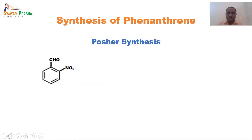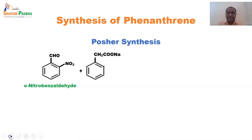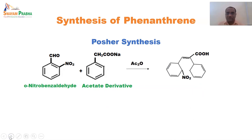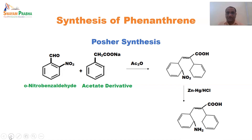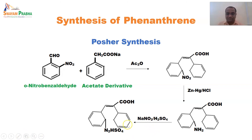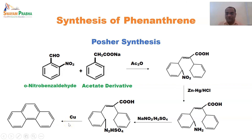The next synthesis is Pschorr synthesis: ortho-nitrobenzaldehyde and an acetic derivative in the presence of acetic anhydride give a cyclized product at the ortho-nitro position. With zinc amalgam in acidic media, the nitro group at the ortho position is reduced to NH2. After forming a diazonium salt with sodium nitrate and H2SO4, further reaction with copper gives the desired phenanthrene.